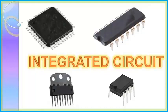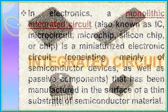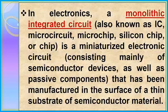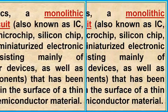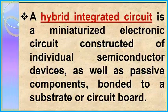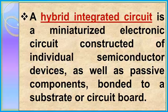The integrated circuit. In electronics, a monolithic integrated circuit is a miniaturized electronic circuit that has been manufactured in the surface of a thin substrate of semiconductor material. A hybrid integrated circuit is a miniaturized electronic circuit constructed of individual semiconductor devices as well as passive components bonded to a substrate or circuit board.